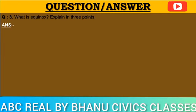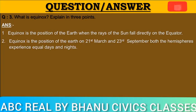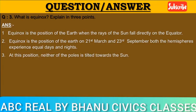Question number three: What is equinox? Explain in three points. Answer: Equinox is the position of the earth when the rays of the sun fall directly on the equator. Equinox occurs on 21st March and 23rd September. Both the hemispheres experience equal days and nights. At this position, neither of the poles is tilted towards the sun.